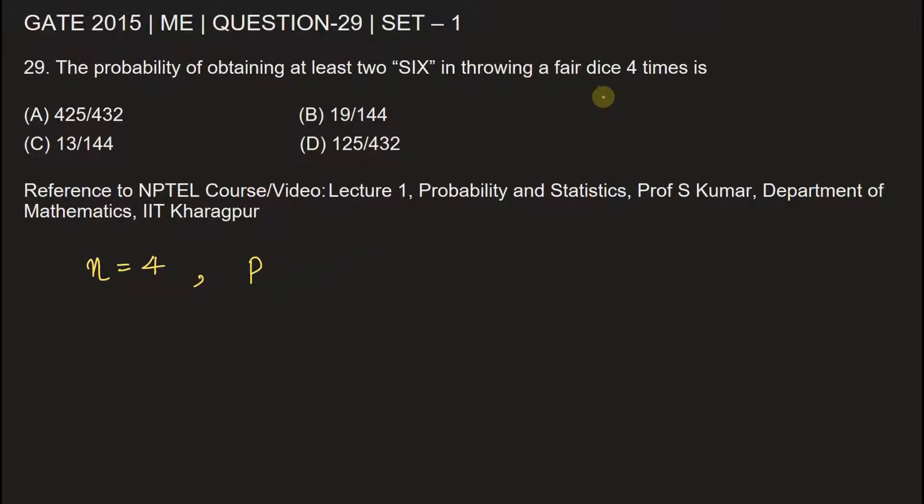A dice has six faces. Therefore, the probability p will be one upon six. From here, we can write q, that is the probability of not getting six, is one minus p, one minus one upon six, that is equal to five by six.